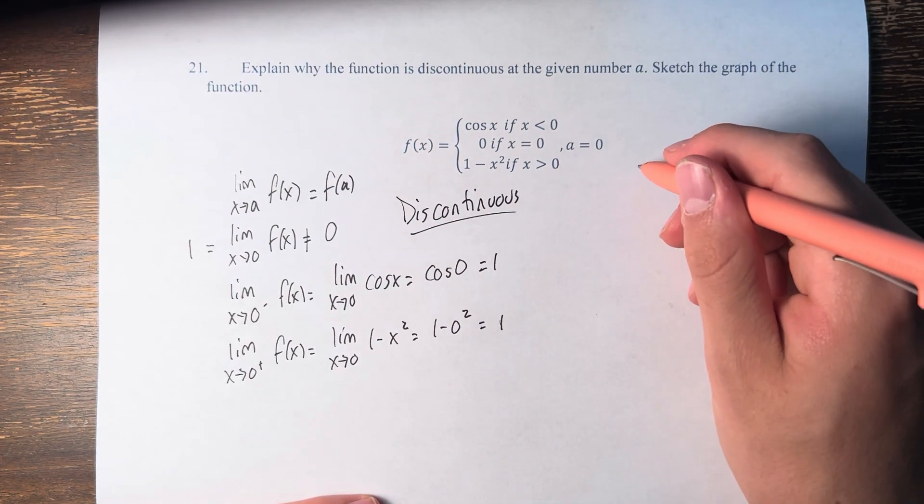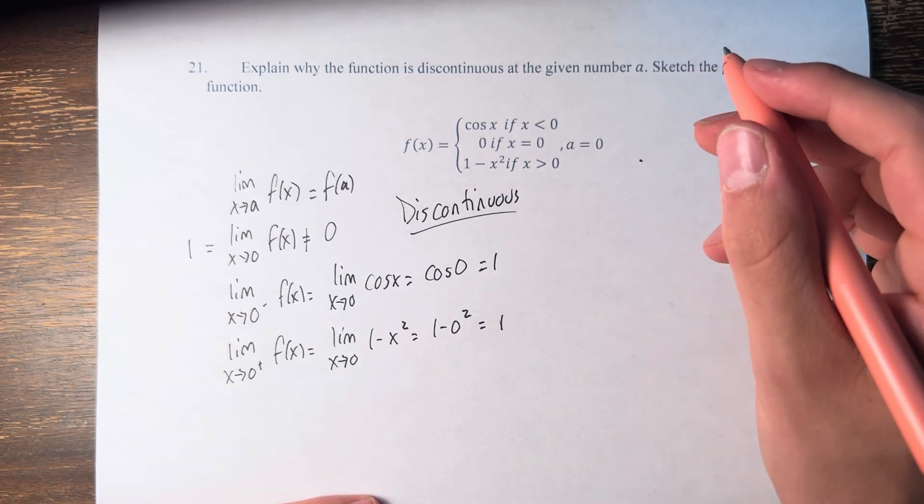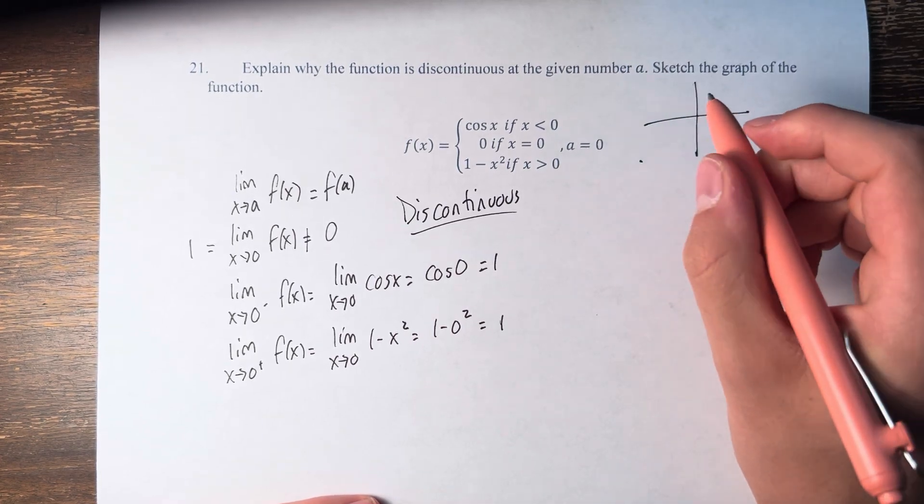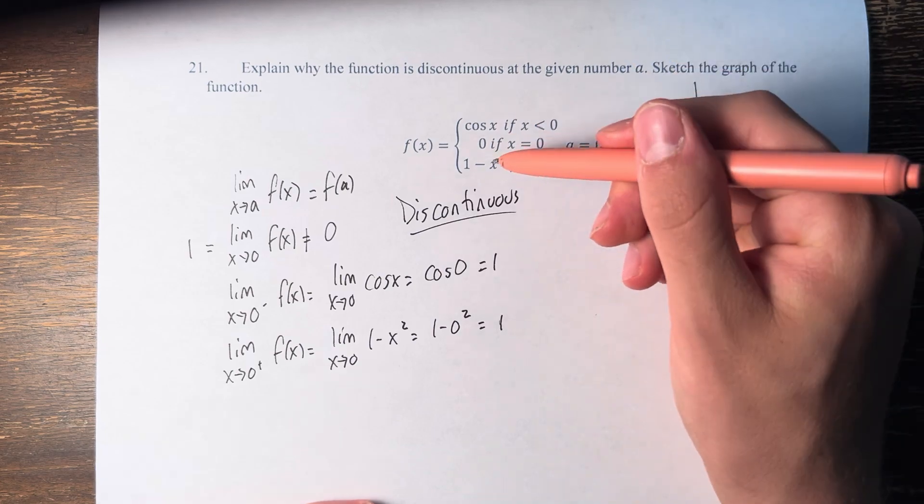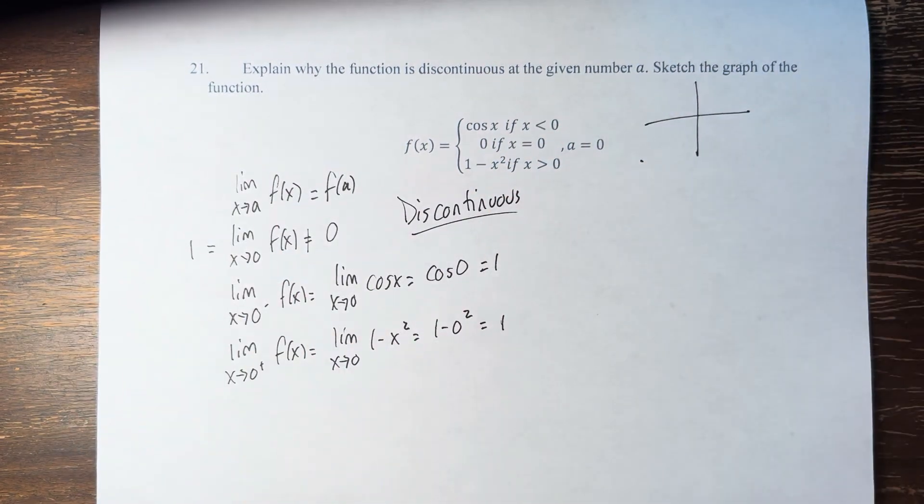Let's draw a graph of the function. So first of all we have the graph of cosine of x, that's easy enough. But 1 minus x squared is not one of the standard functions that we learned.